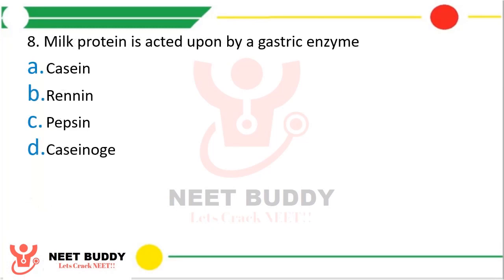Question number 8. Milk protein is acted upon by a gastric enzyme. Option A. Casein, option B. Rennin, option C. Pepsin, or option D. Caseinogen. The correct answer is option B, Rennin. Note that rennin is spelled with double N: R-E-N-N-I-N.